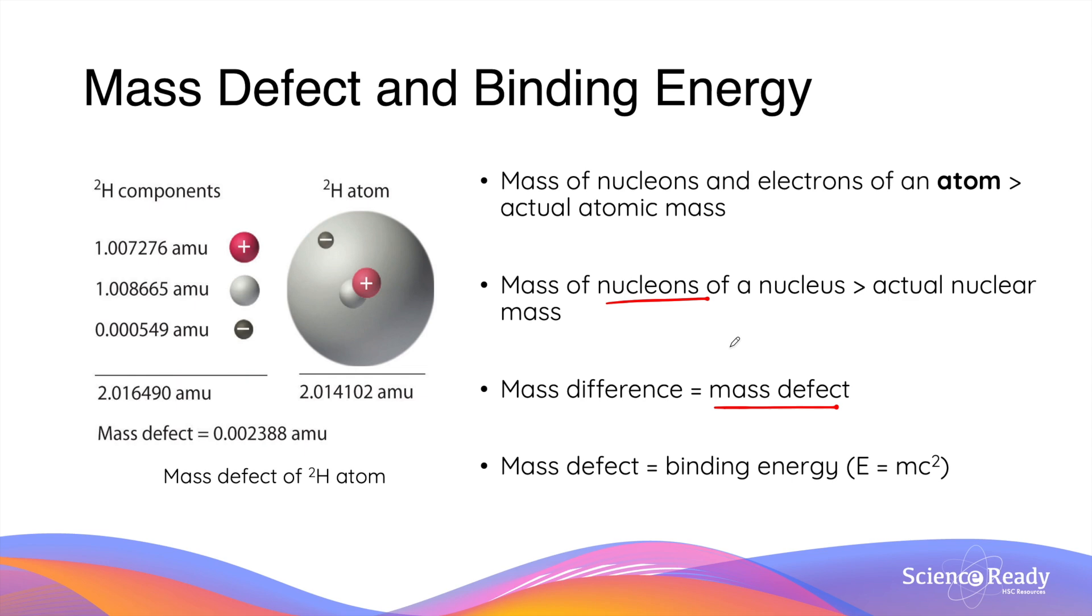The reason why we have this mass defect is because the mass is partially converted into energy when an atom or nucleus is being formed. This energy is known as binding energy. The amount of binding energy formed from the mass defect can be calculated using the mass and energy equivalence principle, E equals MC squared.